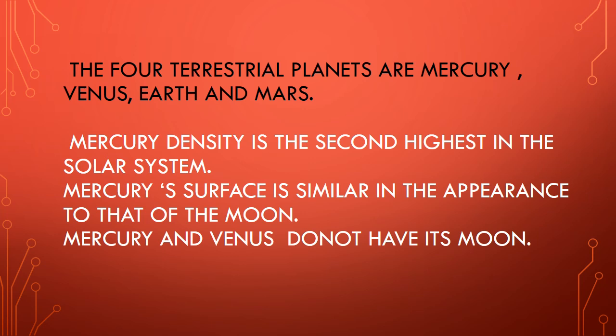Mercury's density is the second highest density in the solar system. I'll leave as a question: which planet has the first highest density? If you know the answer, please give it in the comment section. Next, Mercury's surface is similar in appearance to that of the Moon. The surface looks similar to the Moon.